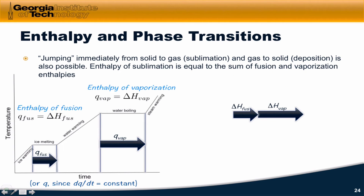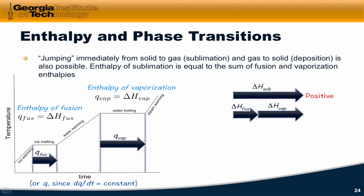Jumping from solid to gas, which is called sublimation, and the reverse process of a gas depositing on a solid, called deposition, are also possible. These processes are like composite phase transitions. Sublimation can be thought of as fusion and vaporization happening at the same time, and the enthalpy change for sublimation is simply the sum of the enthalpy change of fusion and the enthalpy change of vaporization. On a deep level, this is just a consequence of Hess's law.